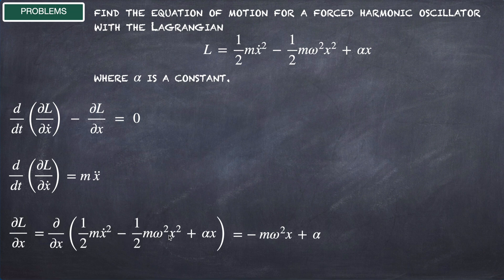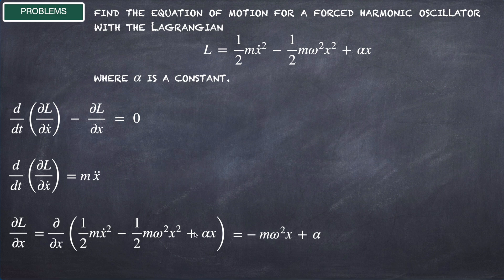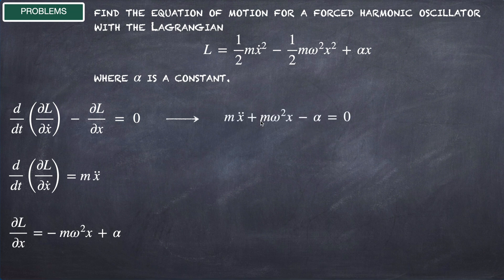Using this result in the Euler-Lagrange equation, we get mẍ + mω²x - α = 0.